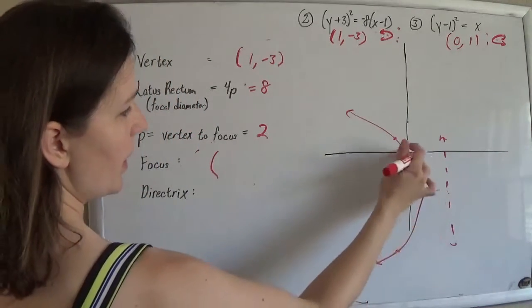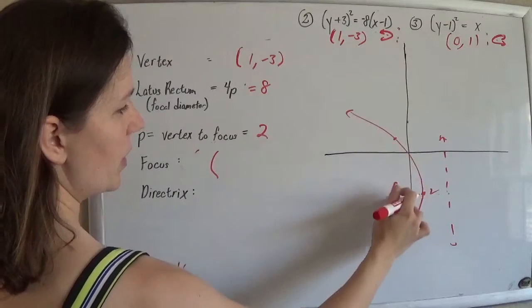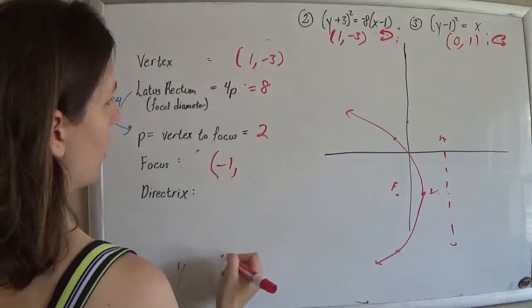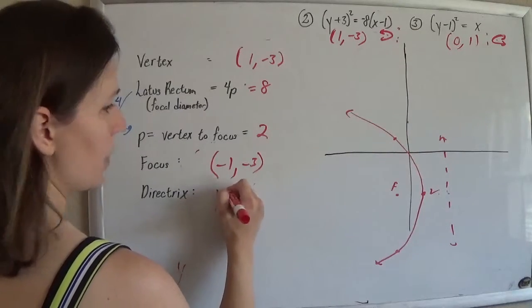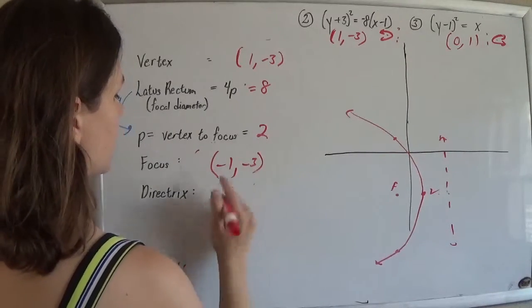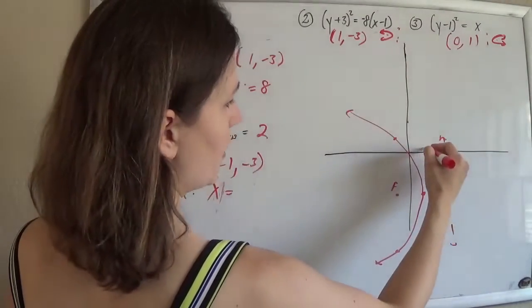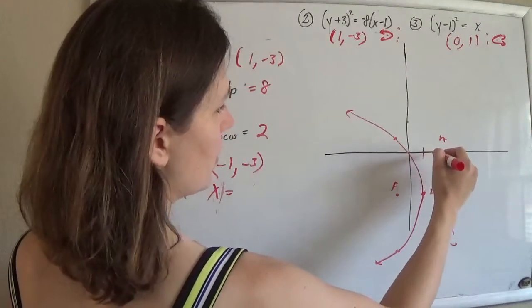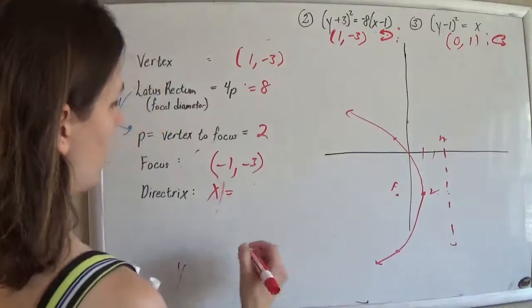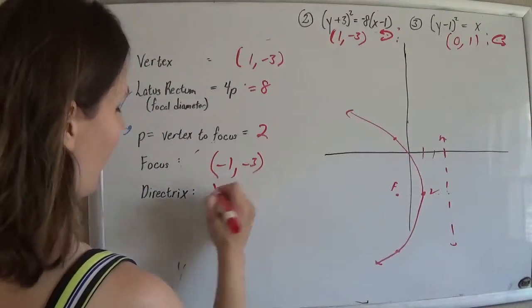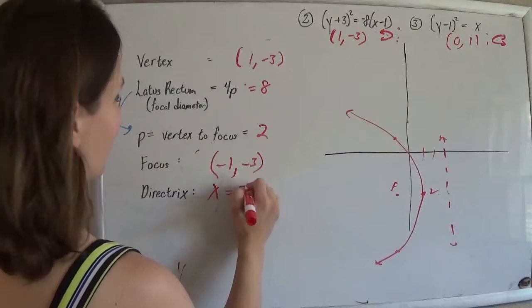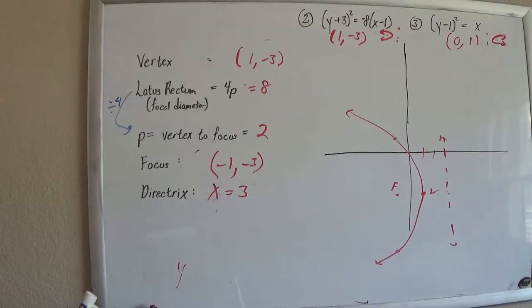My focus ended up at negative 1, negative 3. And my directrix ended up at, that's an x equals, x equals, what was that? That was 1, 2, 3. So that's x equals 3. Going too fast for you guys, sorry. So there that is.